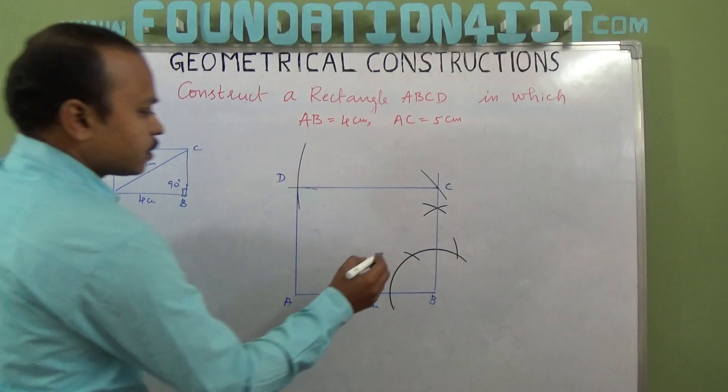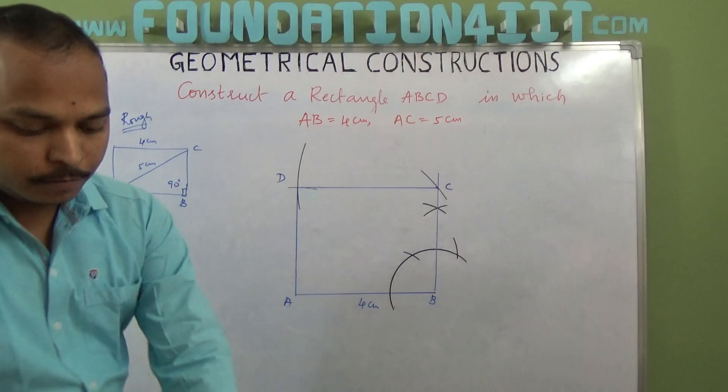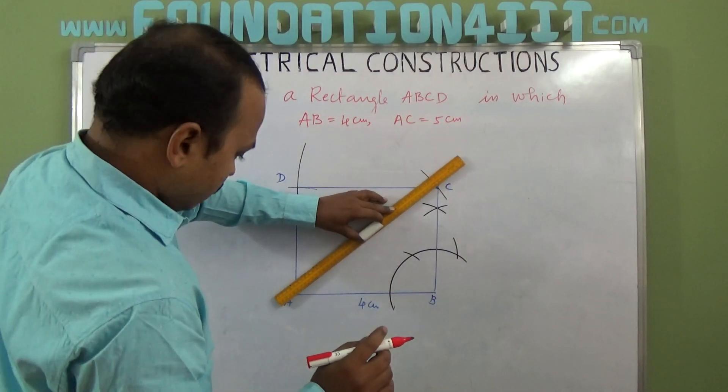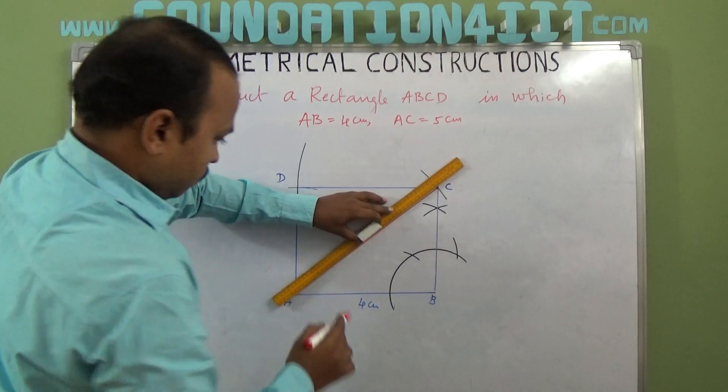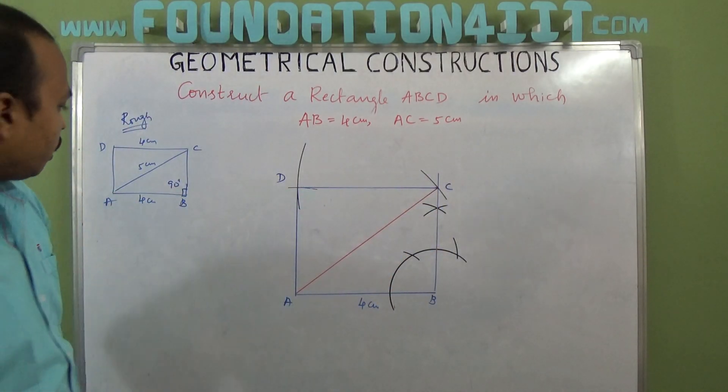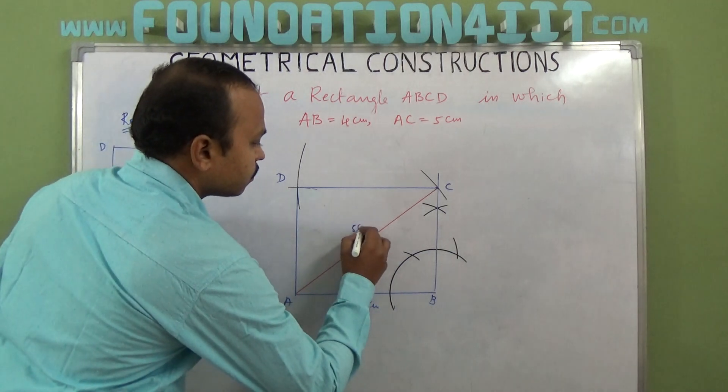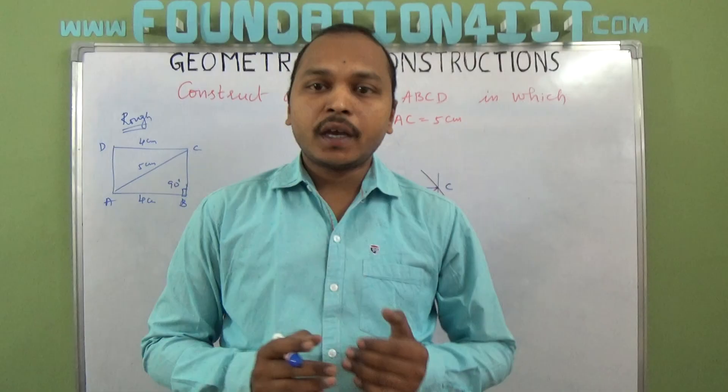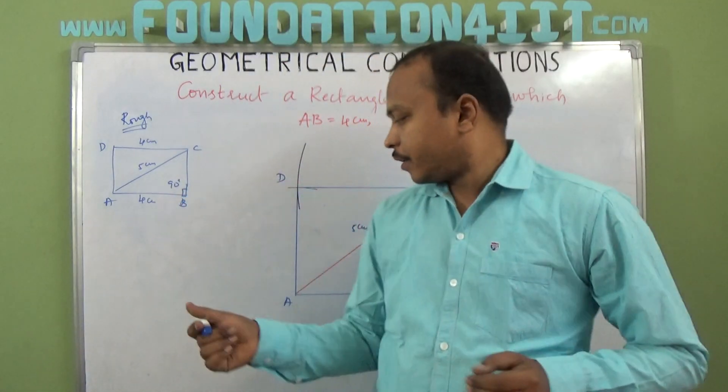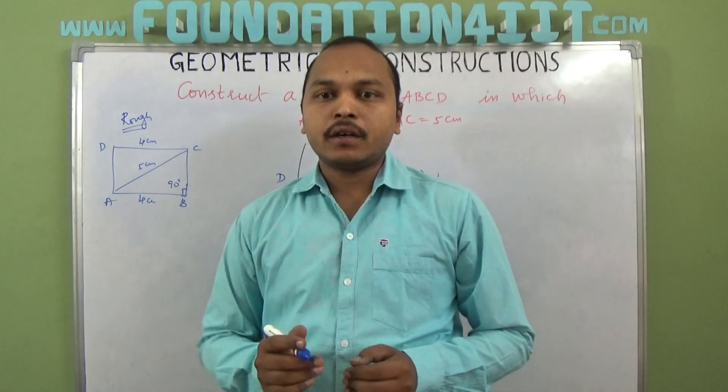So only one side and diagonal is also given. If you draw the diagonal AC, A to C is 5 cm. So this is the way we can construct any rectangle when one side and one diagonal are given.